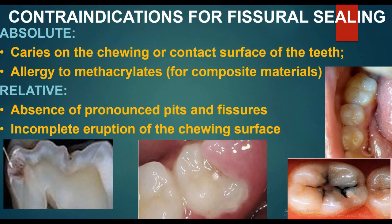Contraindications for fissure sealing: absolute — caries on the occlusal or contact surface of the teeth; allergy to methacrylates for composite materials, though another material can be used. Relative contraindications: absence of pronounced pits and fissures, incomplete eruption of the occlusal surface.